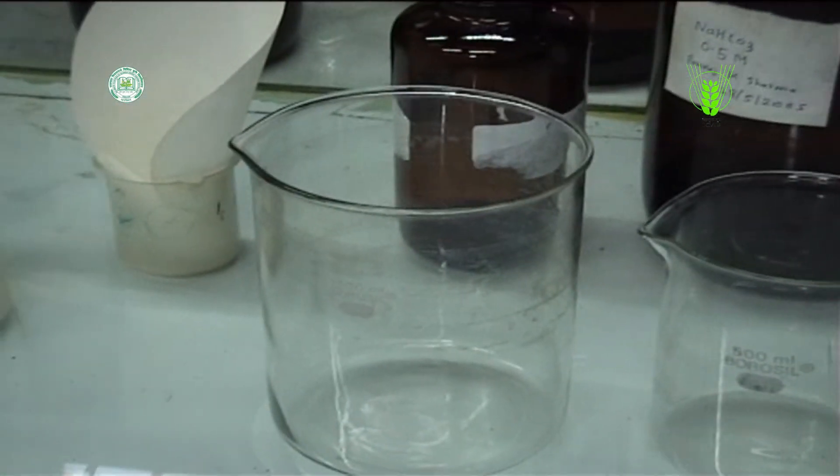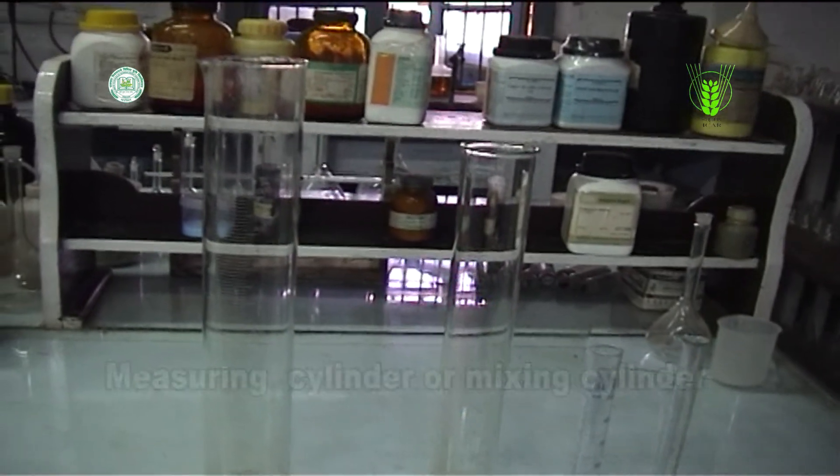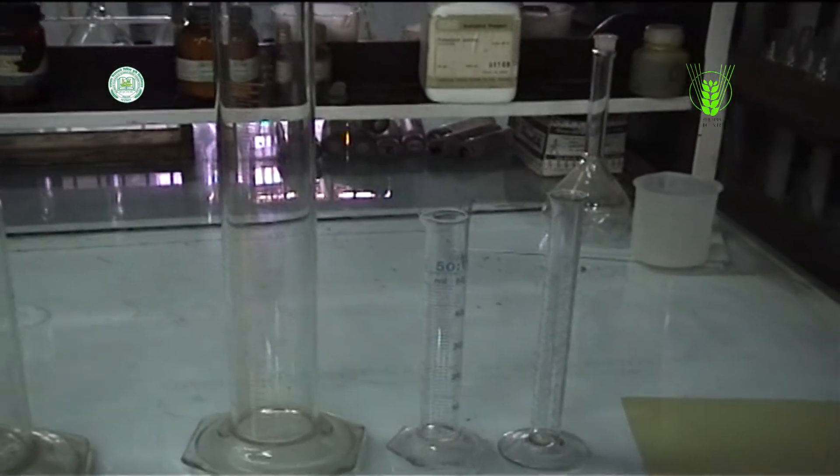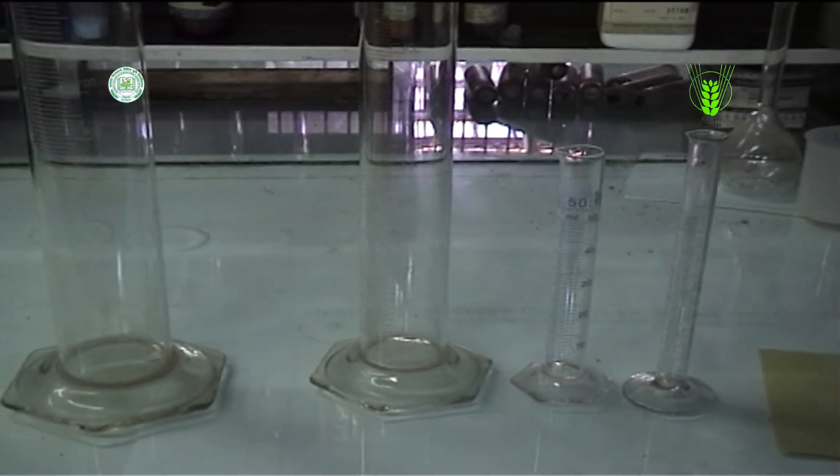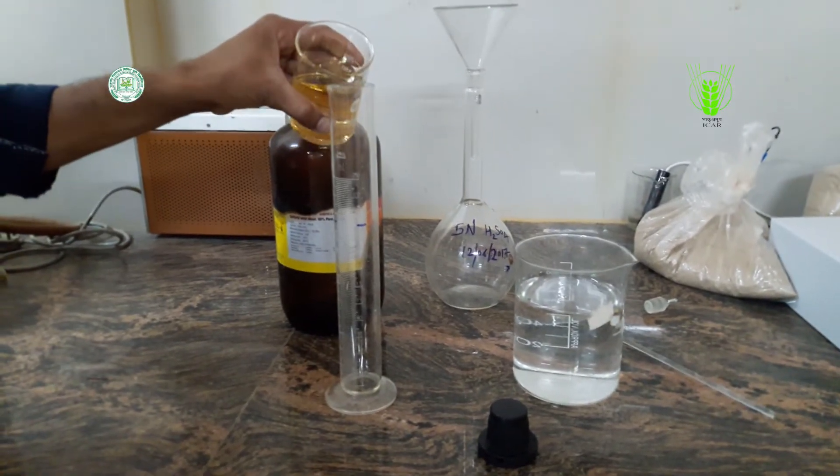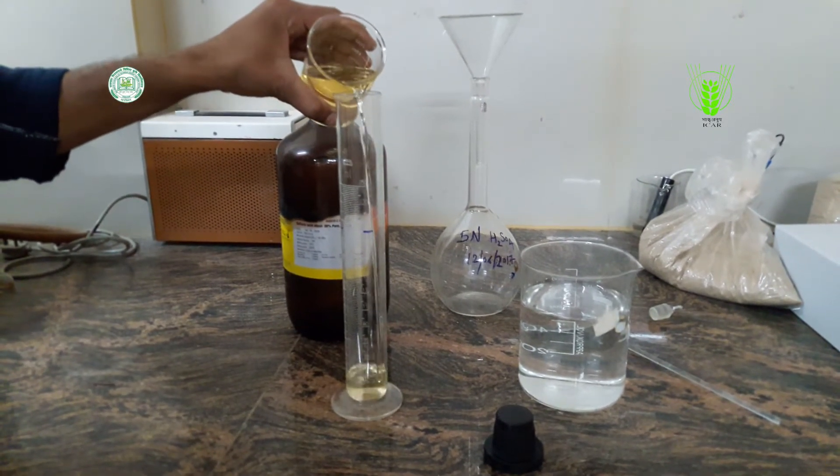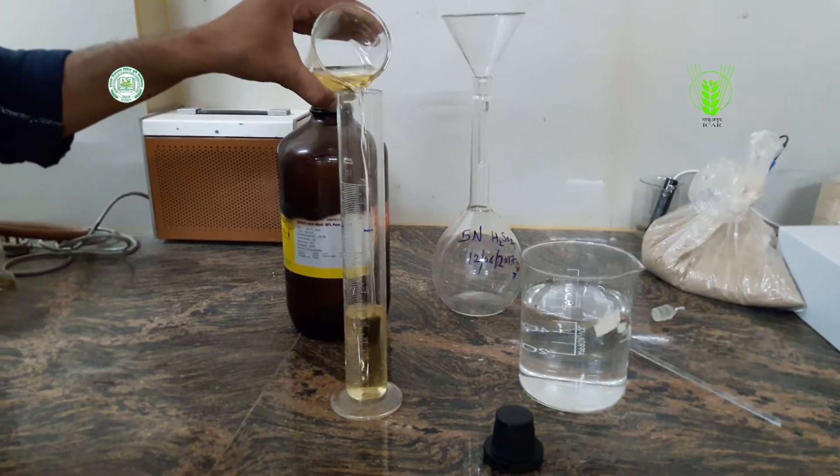Another glassware used in the laboratory are measuring cylinders or mixing cylinders. These are used to measure the volume of a liquid. Graduated cylinders are generally more accurate and precise than laboratory flasks and beakers.